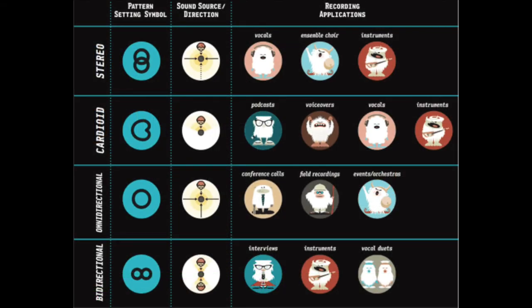The Blue Yeti comes with four different pattern options: stereo, cardioid, omnidirectional, and bidirectional. There's a nice little diagram that shows you where the noise is being picked up from. Bidirectional is like a two-way interview setup, whereas cardioid picks up only from the front of the microphone. Omnidirectional and stereo pick up noise from everywhere. It also shows what each setting is recommended for.